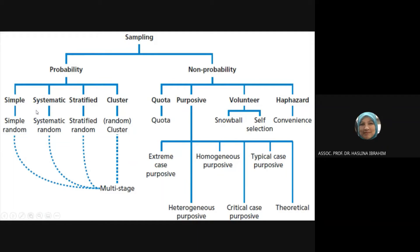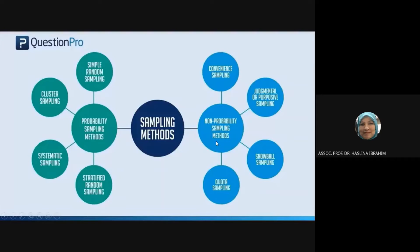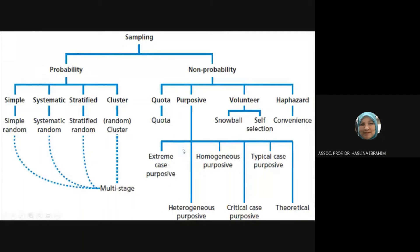Non-probability sampling means that there is no equal chance for everyone, because you decide your sample. For example, if you want to interview an officer from a religious department, you have already identified who will be your respondent.